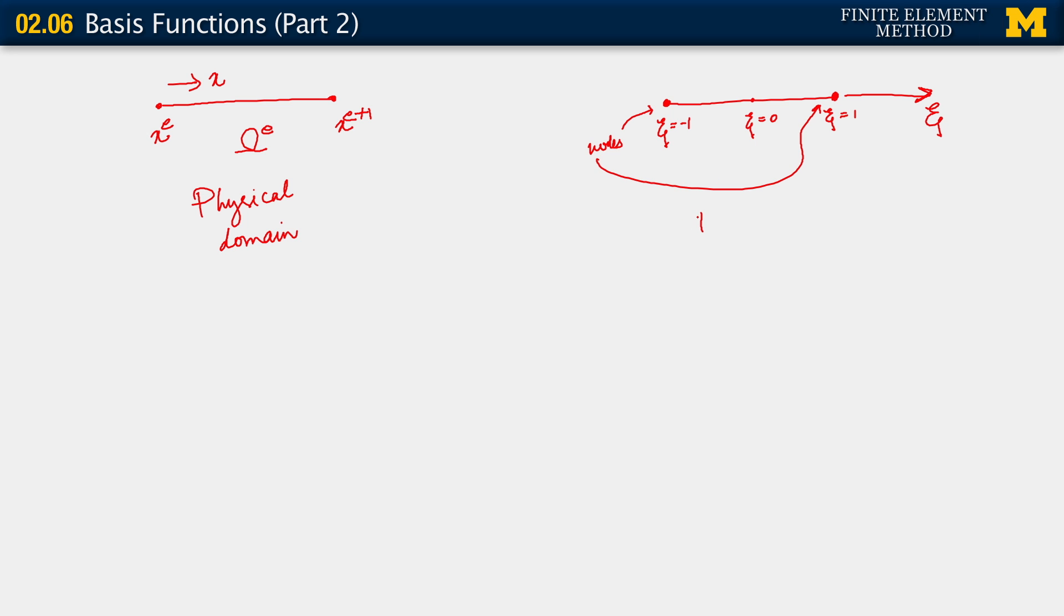Now this is called various things. Some people may call it the mathematical domain. I call it the bi-unit domain. Bi-unit because I'm saying that the length of my element in this domain goes from minus 1 to 1. It's 2, so it's 2 times 1. So it's a bi-unit domain.